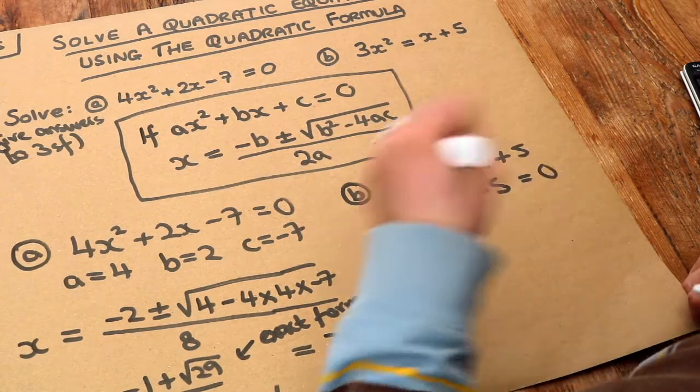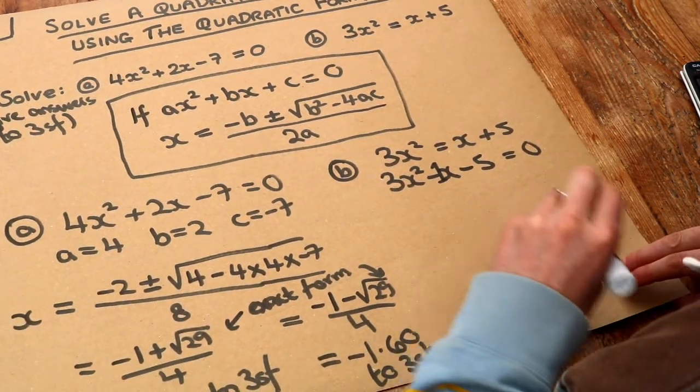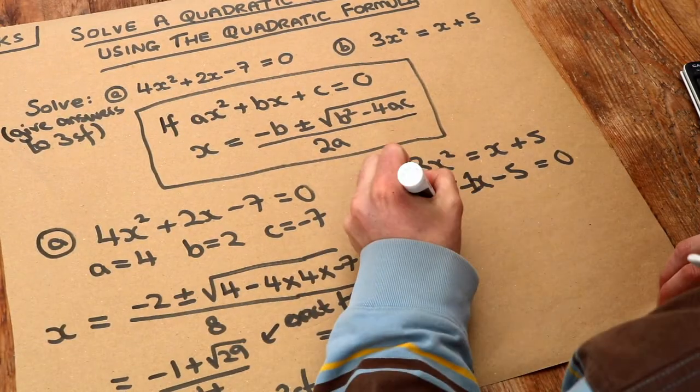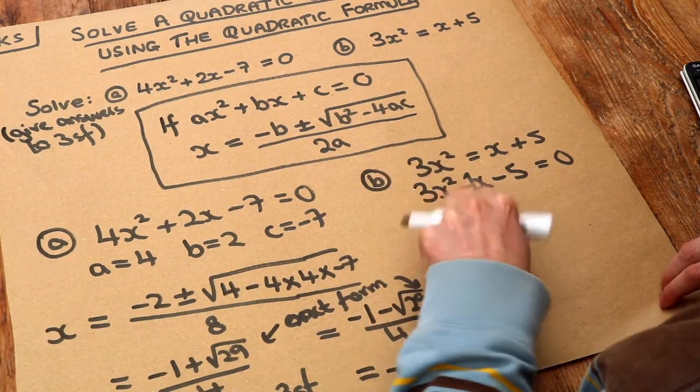Plus x is the same as plus 1x. We've got a kind of ghostly one. Let's write our a, b and c as before. So a is the coefficient of x squared which is 3.